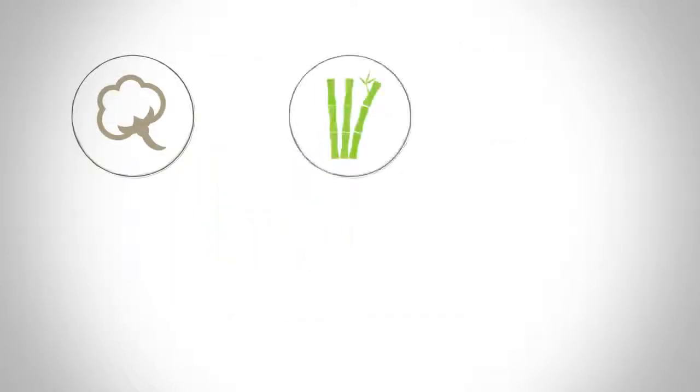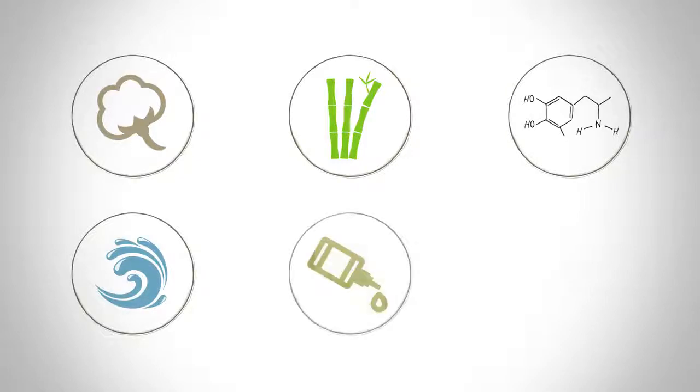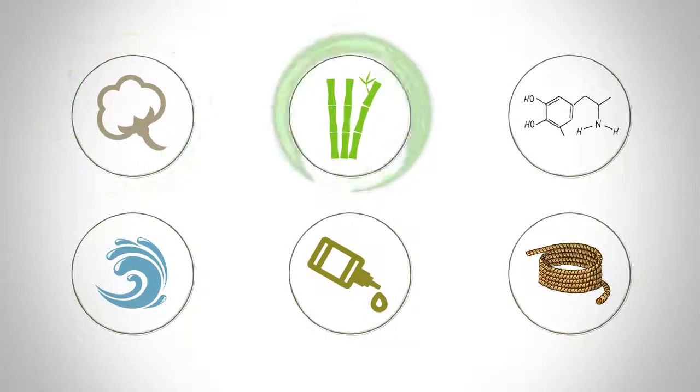Cotton, bamboo, polyester, water, essential oils, and hemp - these materials emit their own low-energy natural waveforms.